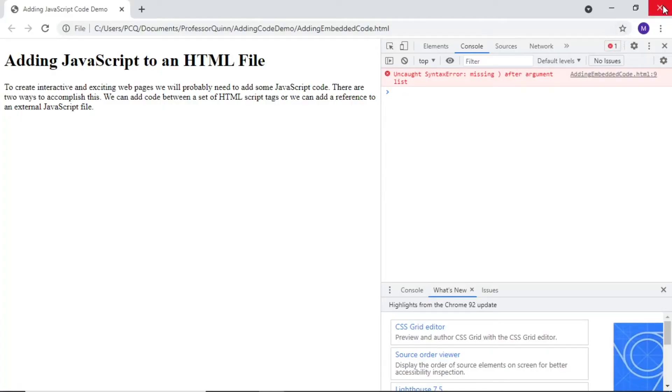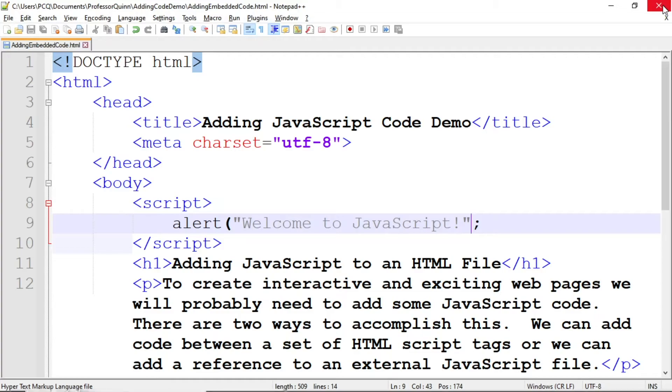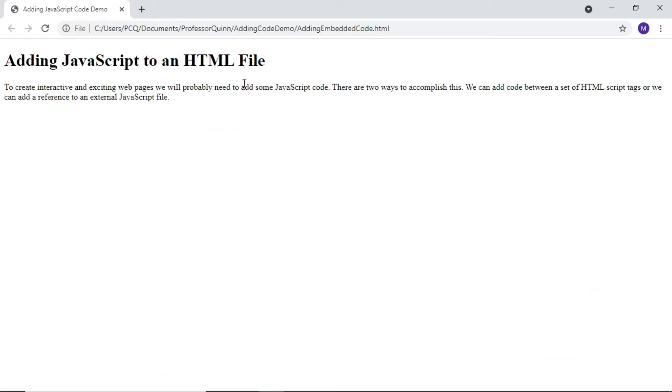We'll go back to Notepad++ and fix the code by adding the parentheses. We'll make one last mistake by removing the closing quote. We'll save, and run the updated file, and the alert box does not appear once again.